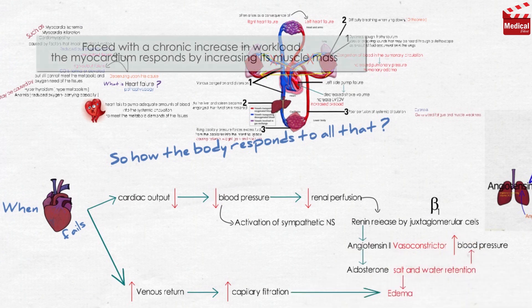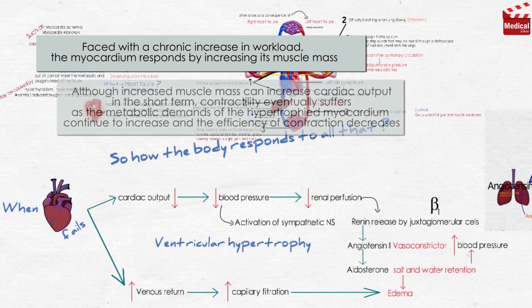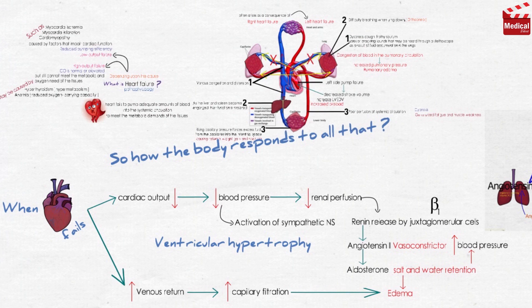Faced with a chronic increase in workload, the myocardium responds by increasing its muscle mass, known as ventricular hypertrophy. Although increased muscle mass can increase cardiac output in the short term, contractility eventually suffers as the metabolic demands of the hypertrophied myocardium continue to increase and the efficiency of contraction decreases.